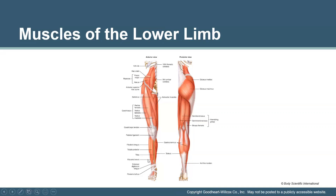From the anterior view, we can also see the tibialis anterior muscle, which is lateral to the tibia and is the primary reason you get a shin splint. It's responsible for dorsiflexion and inversion of the foot. Then there's the extensor digitorum longus, and the fibularis longus, fibularis brevis, and fibularis tertius — all three fibularis muscles originate on the fibula, insert on the metatarsals, and have the role of plantar flexion and eversion.